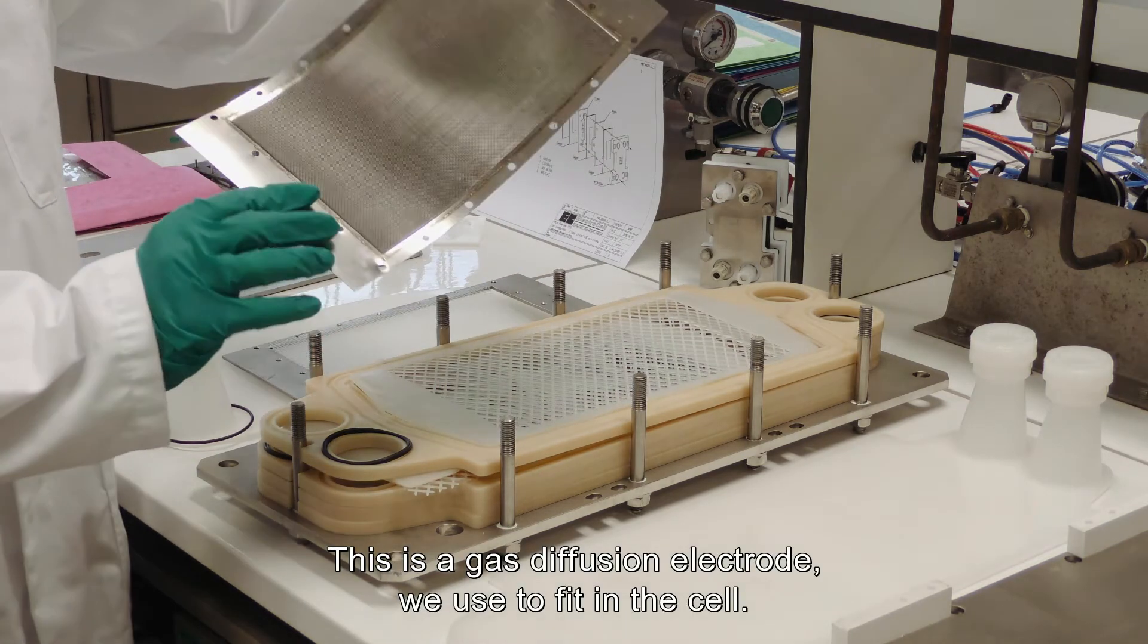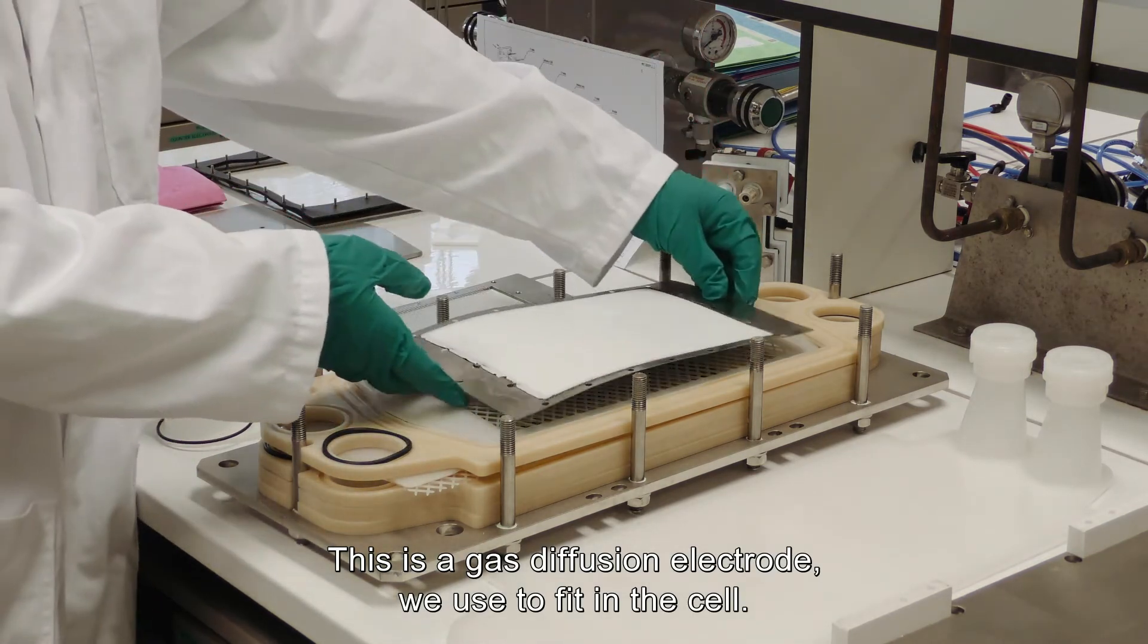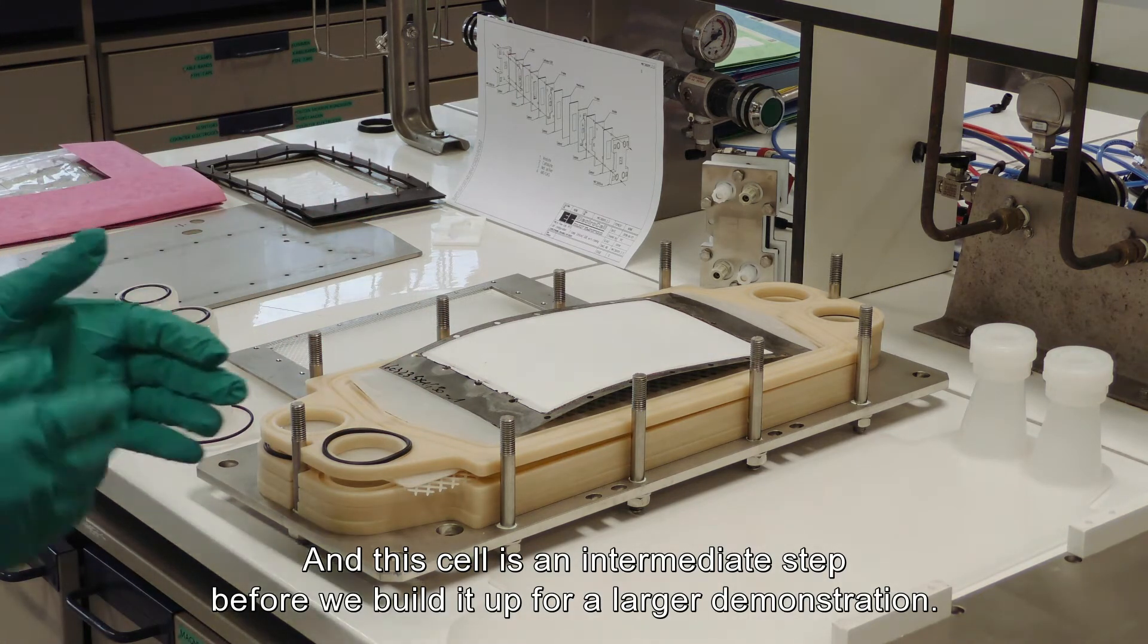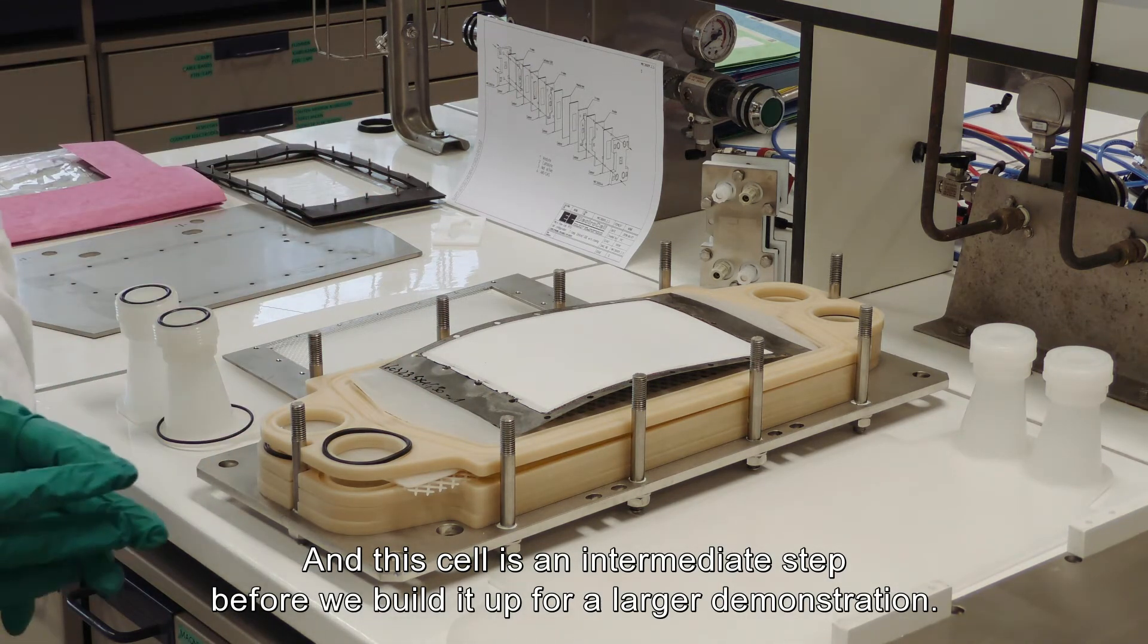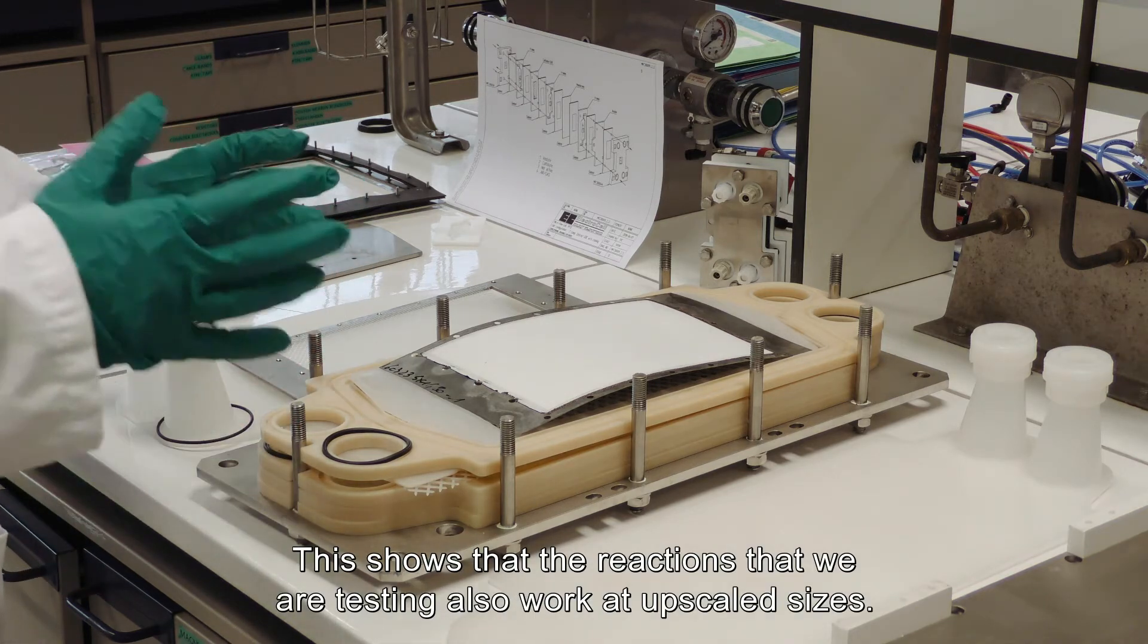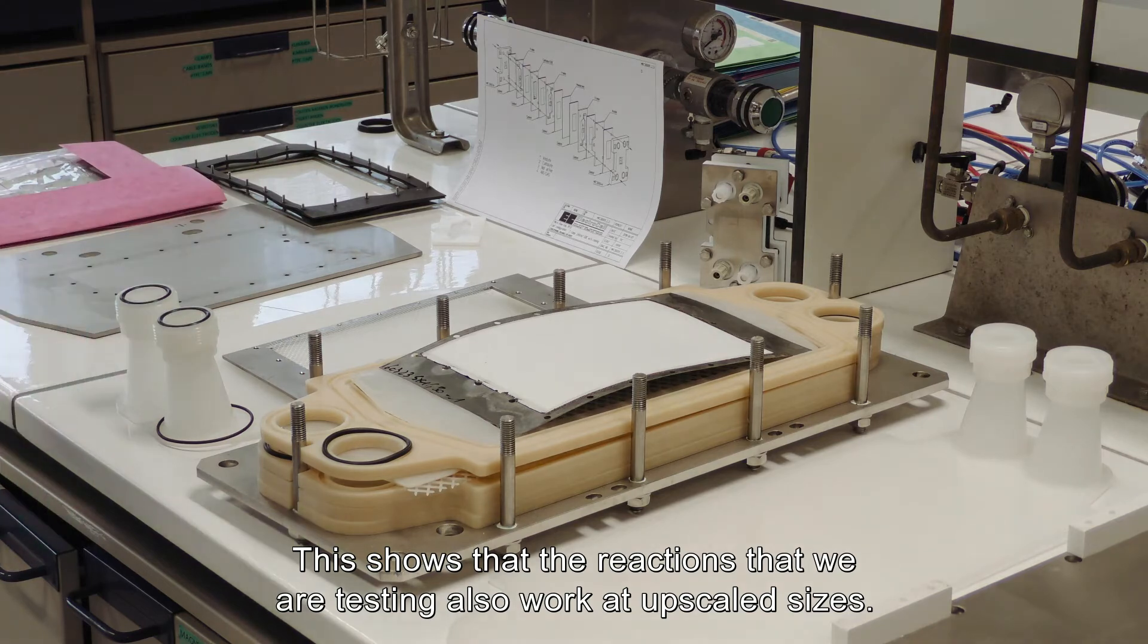This is a gas diffusion electrode which I showed earlier, which we use to fit in this cell. This cell is an intermediate step before we build it up to a further larger demonstration. This shows that the reactions that we are testing also work at upscale sizes.